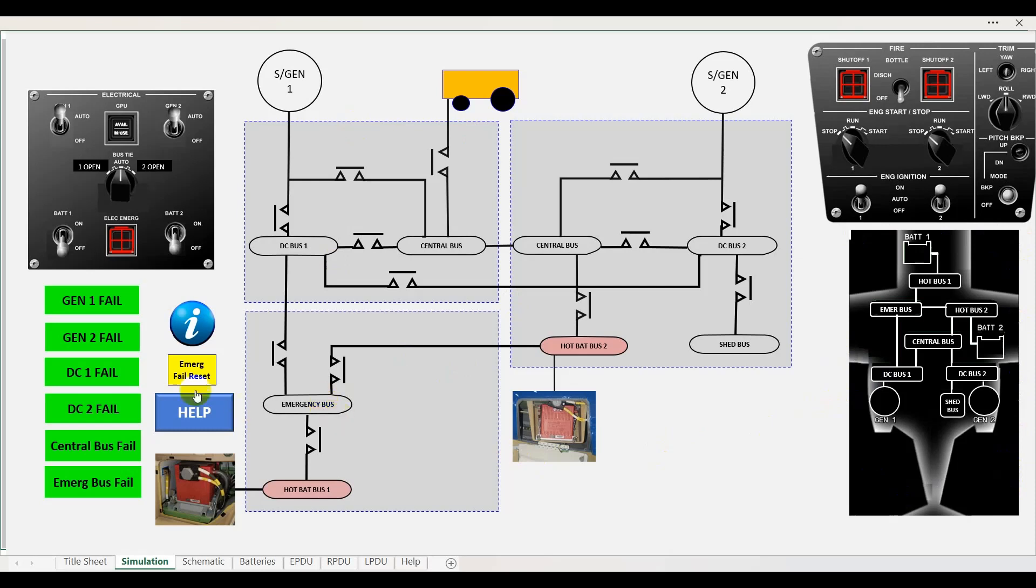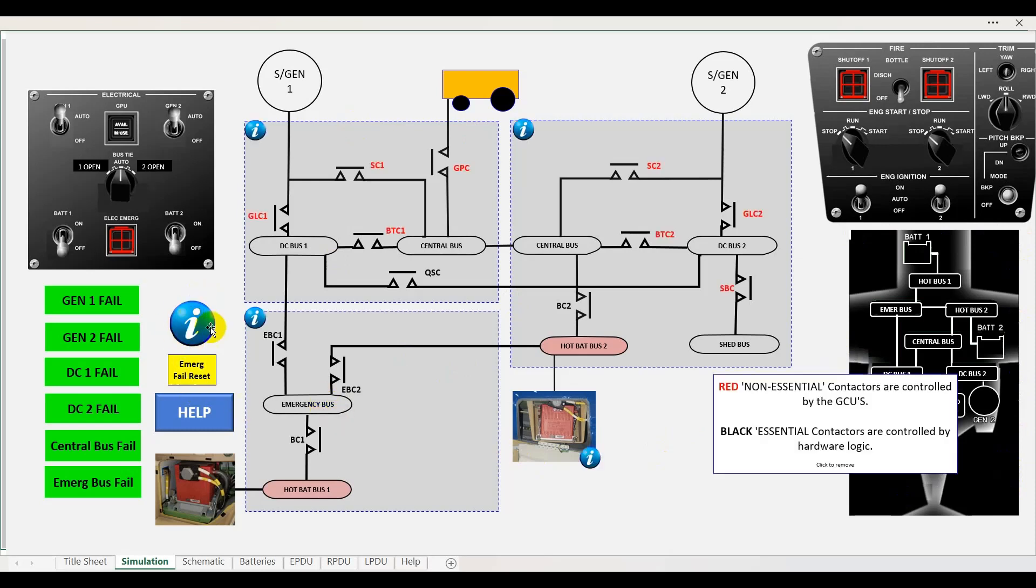Here we've got our electrical system. At the moment it's powered down. I've got a little icon here for information, and if we click on that, you can see it brings up the names of all the contactors. The red ones are non-essential and controlled by the GCU, and the black ones are the essential contactors controlled by hardware logic.